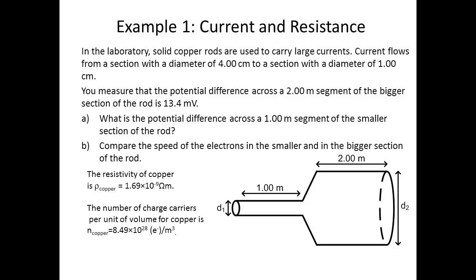You measure that the potential difference across a 2 m segment of the bigger section of the rod is 13.4 mV. What is the potential difference across a 1 m segment of the smaller section of the rod, the one that has a diameter of 1 cm?